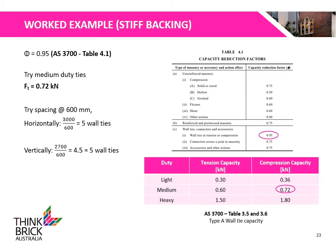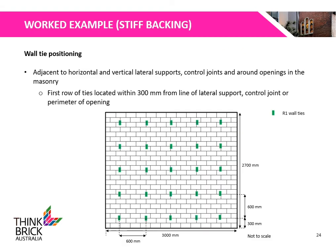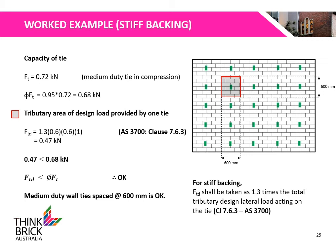Using a spacing of 600mm, we find that 5 wall ties can span horizontally and vertically. Wall ties shall be positioned adjacent to any horizontal and vertical lateral supports, control joints and around openings in the masonry. The first row of ties shall be located within 300mm from the line of the lateral support, control joint or perimeter of the opening. The factored medium duty wall tie capacity is calculated to be 0.68 kN. For a stiff backing, the design compressive force is 1.3 times the total tributary design lateral load, calculated to be 0.47 kN. As the design compressive force is less than the factored wall tie capacity, medium wall ties spaced at 600mm is OK for use.